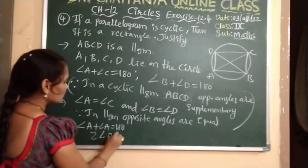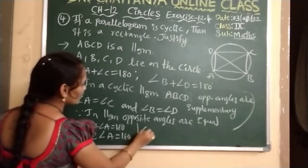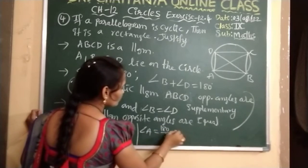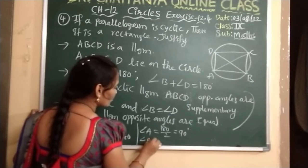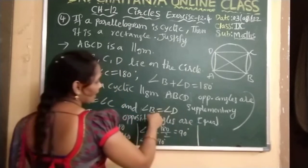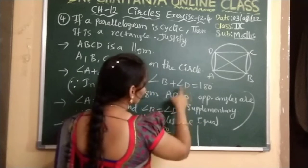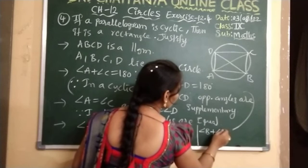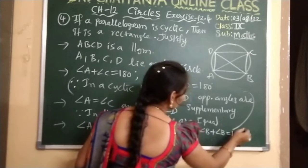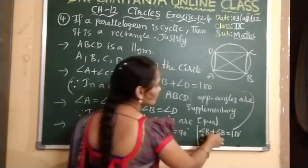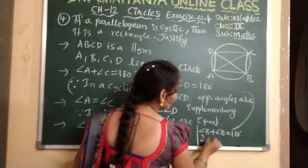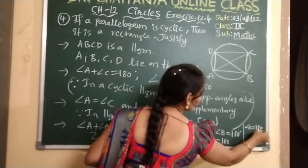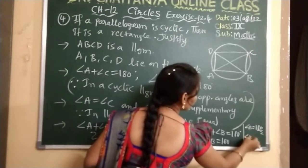So 2 times angle A equals 180, therefore angle A equals 90 degrees. Similarly, since angle B equals angle D, substitute angle B into the second equation: angle B plus angle B equals 180, so angle B equals 180 divided by 2, which gives angle B equals 90 degrees.